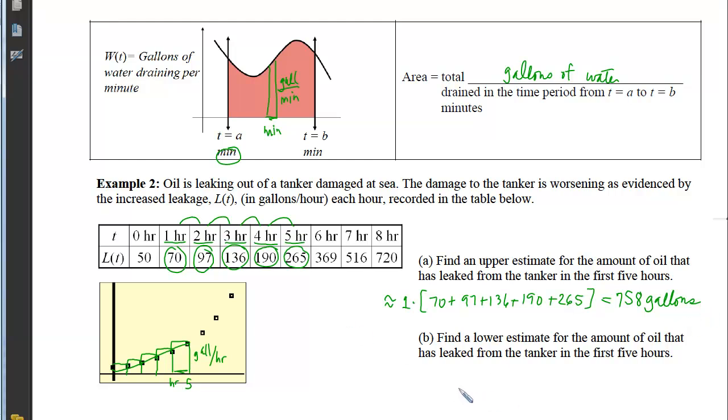With Part B, we want to find a lower estimate for the amount of oil that has leaked from the tanker in the first five hours. So we're going to change colors here, and let's look at this subinterval, and because I want a lower estimate, that means I'm going to pick the smallest y value in each of these subintervals. So instead of choosing the one that is on the right, I'm going to choose the one that is on the left. That means in my first subinterval, I'm going to choose the zero's output, then I'll choose the one, then I'll choose the two, then I'll choose the three, and then I'll choose the four.